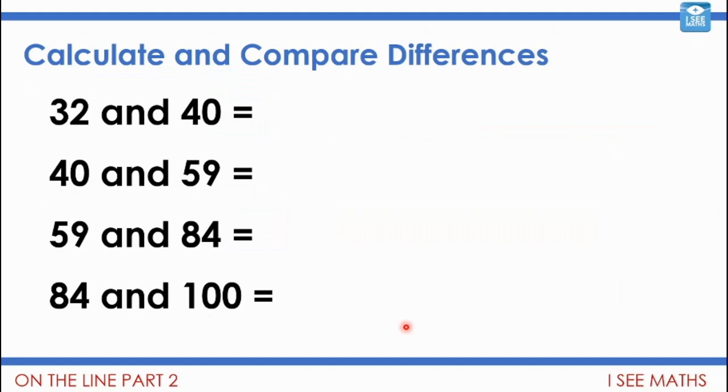Now we're going to come to a problem solving task around positioning numbers on the number line that you're going to have a go at. But what I want you to do first of all is this: calculate and compare the differences. What's the difference between these numbers 32 and 40, what's the difference between 40 and 59, 59 and 84, 84 and 100?